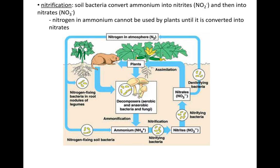Nitrification: ammonium, with the help of special bacteria, gets turned into nitrites (NO2-). Nitrites are then affected by other bacteria, and the nitrites become nitrates. So nitrification is where you take ammonium and it gets eventually turned into nitrate. Nitrate is now the usable form for the plant — this is good for the plant.